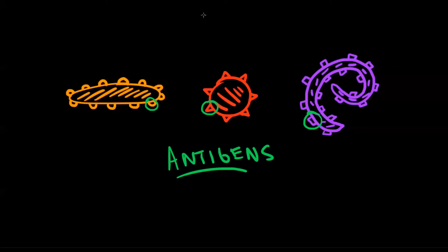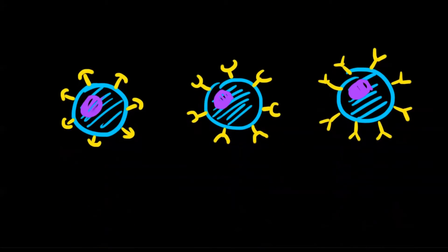So the question is, how can your body tell the difference between these molecules? Here's the answer. At any given time in your body, there are billions of different immune cells, each with a different shaped receptor. Here are a few of those immune cells to illustrate the idea.